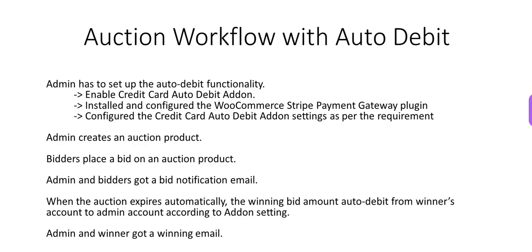Now let's check the auction workflow with auto debit functionality. First of all, the admin has to set up the auto debit functionality: enable the credit card auto debit add-on, install and configure the WooCommerce Stripe payment gateway plugin, and configure the add-on settings as per the requirement.